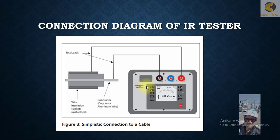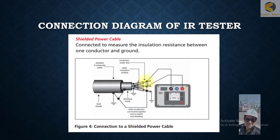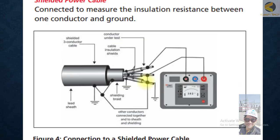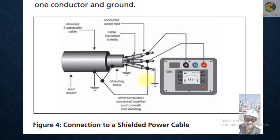This is another example—testing a shielded power cable. The difference here is that with a shielded three-conductor cable, the shield is also part of the object under test and is connected to the black terminal.